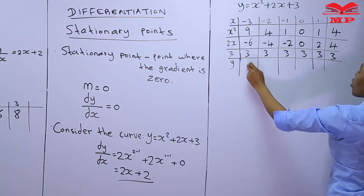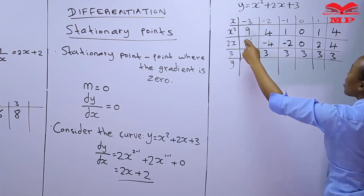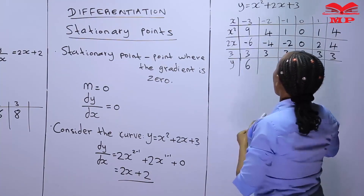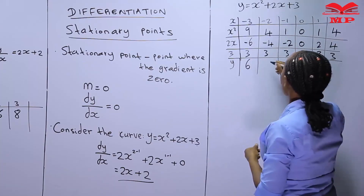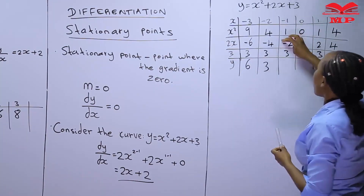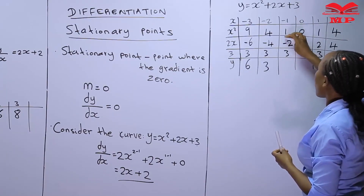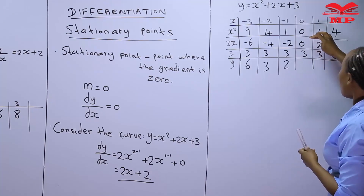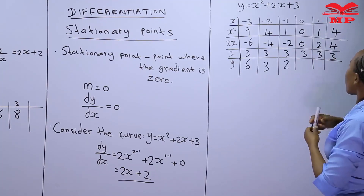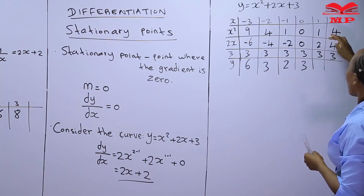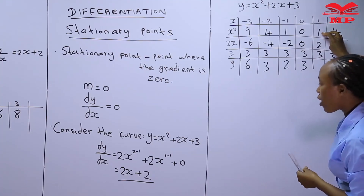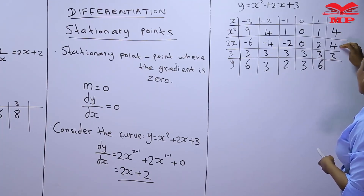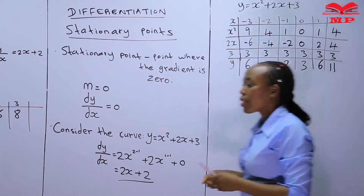Computing the y-values: for x = -3: 9 + (-6) + 3 = 6. For x = -2: 4 + (-4) + 3 = 3. For x = -1: 1 + (-2) + 3 = 2. For x = 0: 0 + 0 + 3 = 3. For x = 1: 1 + 2 + 3 = 6. For x = 2: 4 + 4 + 3 = 11.